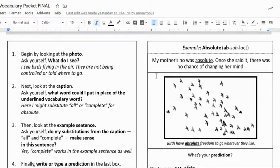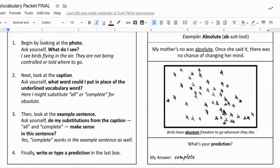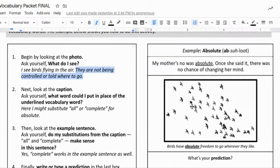It has some instructions. First, begin by looking at the photo and ask yourself what do I see. So here we have some birds, so I have here 'I see birds flying in the air. They're not being controlled or told what to do.' Okay, great.